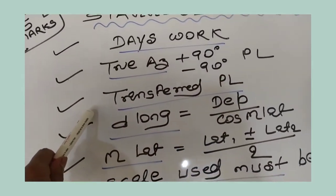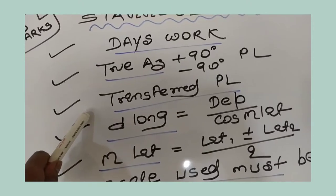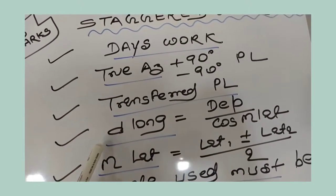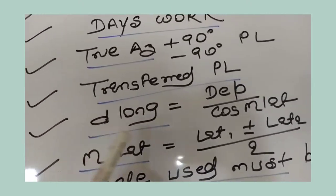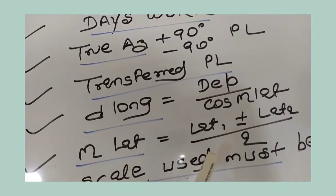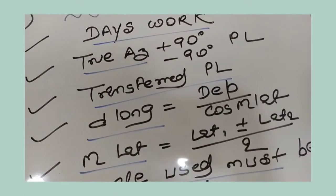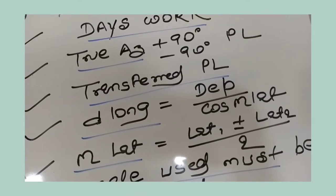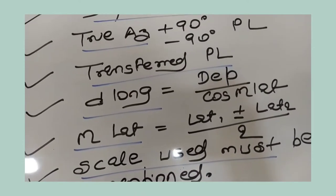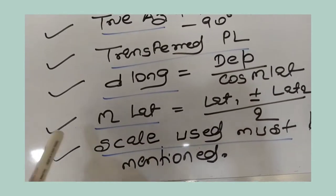You should know the basic concept of transferred PL, which is shown with two arrows. D long - how to calculate d long: departure upon cos m lat. And m lat means mean latitude, which is the sum of the latitudes or difference of the latitude by two, depending on if both are north then it is added. If one is north one is south, then you will subtract.